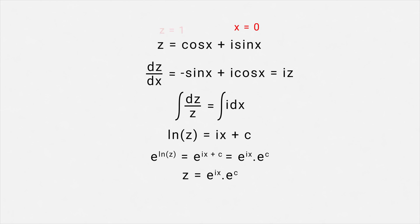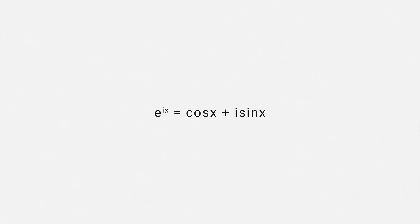If we put x equal to 0, we get z equal to 1. Therefore, we arrive at Euler's formula.